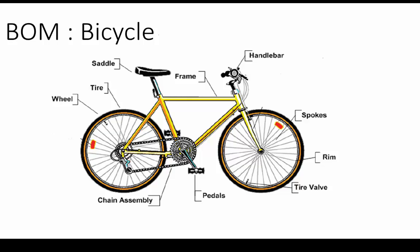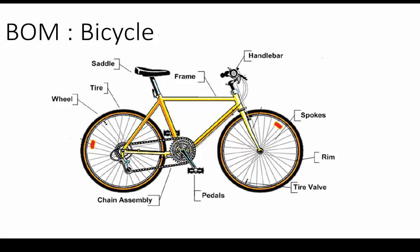For example, two pieces of wheels — one front and one rear — two pieces of pedals, one piece of frame, and so on. Each component in a BOM is called a BOM line. This is how the bicycle BOM hierarchy looks like.